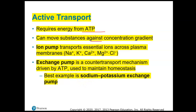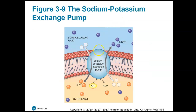The most well-known example is the sodium-potassium exchange pump, which is a counter-transport exchange pump — it pumps sodium out and potassium into the cell, against their concentration gradients. Here's the sodium-potassium pump in blue. The concentration of sodium is high outside in the extracellular fluid and low in the cytoplasm, yet the pump still pushes sodium out. Three sodium ions are pumped out for every two potassium ions pumped in.